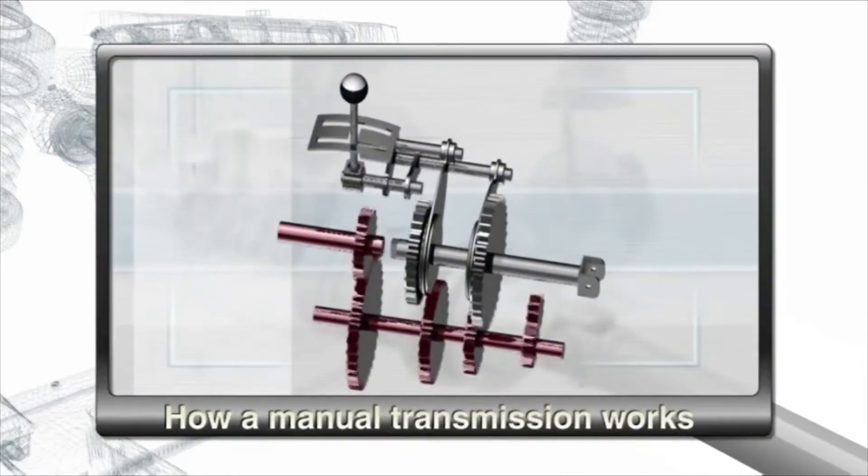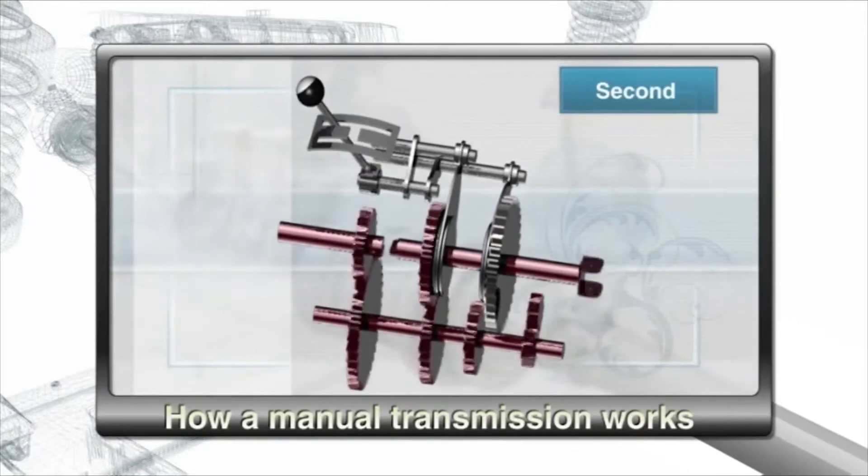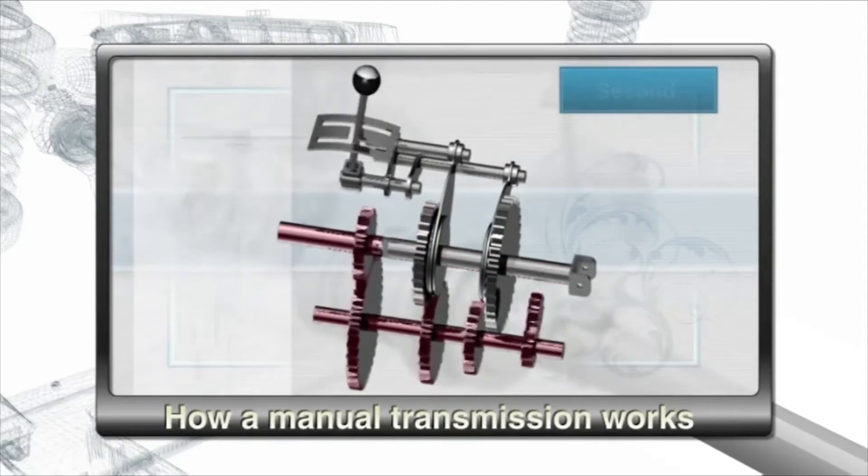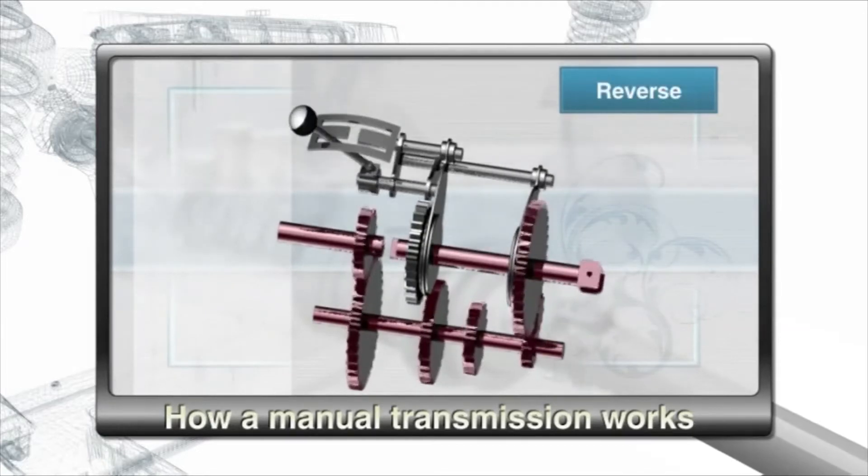The transmission converts revolutions using gear ratios. In manual transmissions, the driver must manually change gears using the shift lever. By shifting gears, the direction of rotation can be changed. This allows the vehicle to move forward and backward while the engine only produces rotations in one direction.